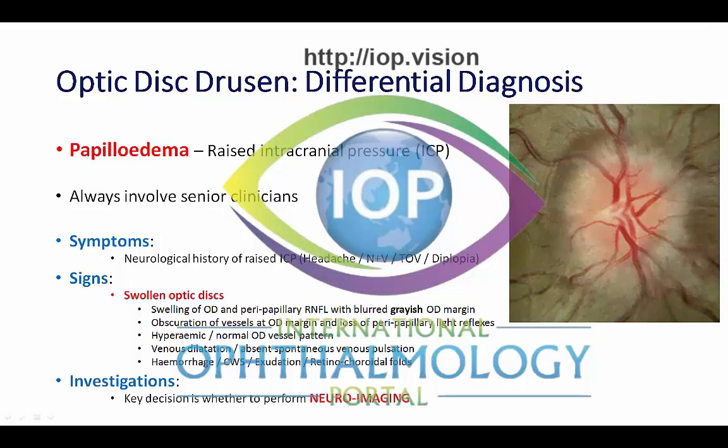On the face of it, there are some good distinguishing features. Looking at symptoms first: in the neurological history of raised intracranial pressure, patients may have characteristic headaches, early morning nausea, vomiting, transient obscurations of vision, or diplopia. Of course, many of these things could also occur in Drusen — for example, headache and transient visual obscurations.